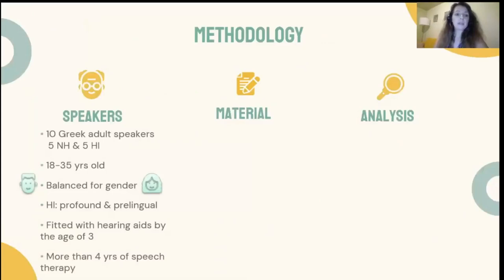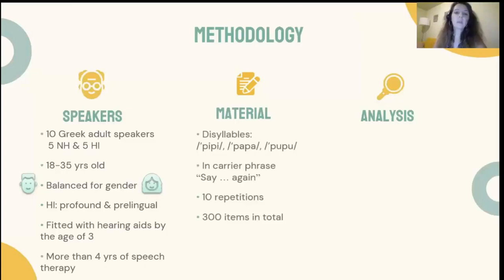For the current investigation, the participants were 10 Greek adult speakers: five with normal hearing and five with prelingual profound hearing impairment, balanced for gender. All participants were 18 to 35 years old and native speakers of Greek. Hearing loss was diagnosed before the age of two; they had all been fitted with hearing aids by the age of three and had received more than four years of speech therapy at the time of recording. They produced symmetrical CVCVC syllables with the consonant P and the corner vowels E, A, U, with stress on the first syllable in a carrier phrase. Each syllable was produced 10 times in a soundproof room, and participants were asked to read the sentences at a comfortable rate and volume. A total of 300 items was analyzed.